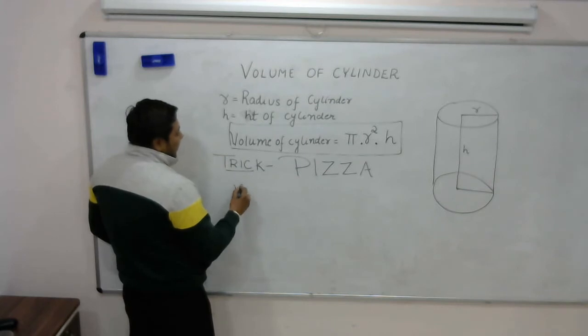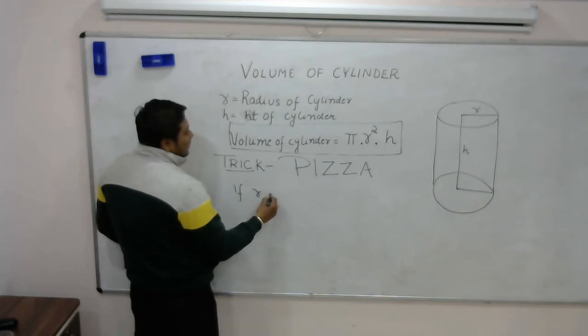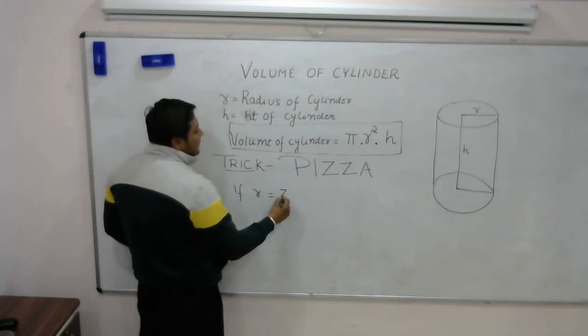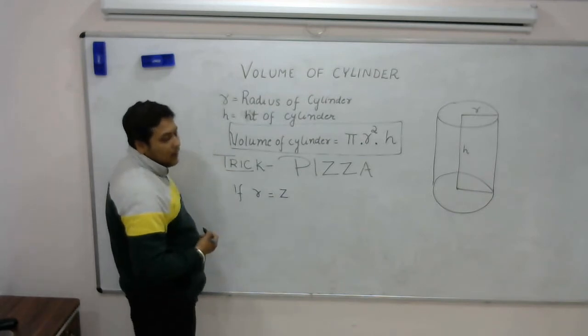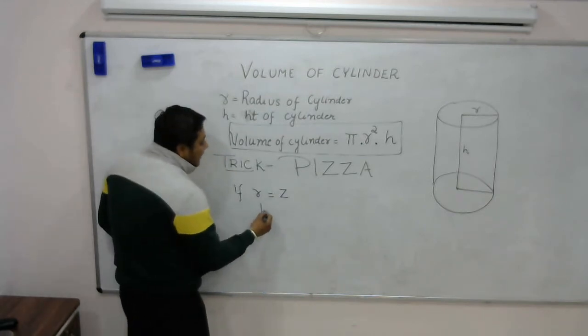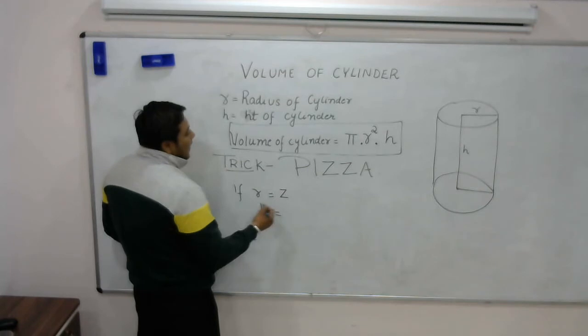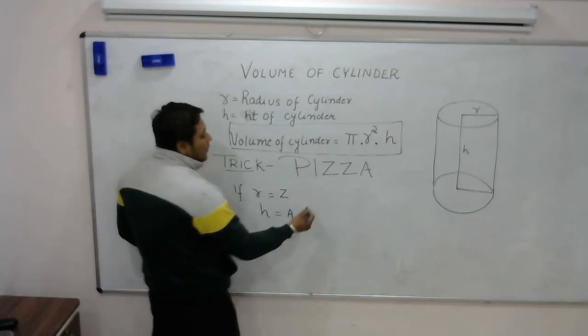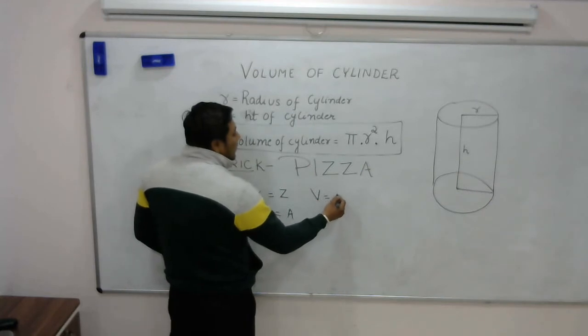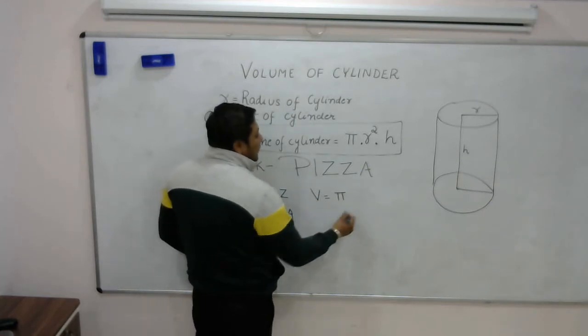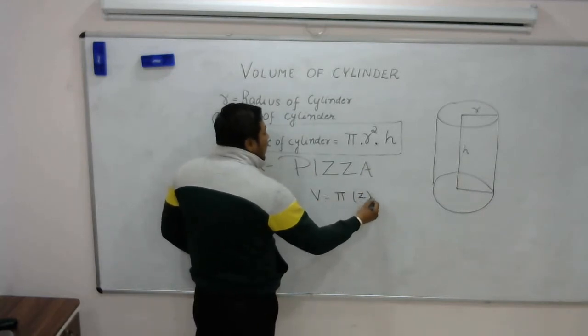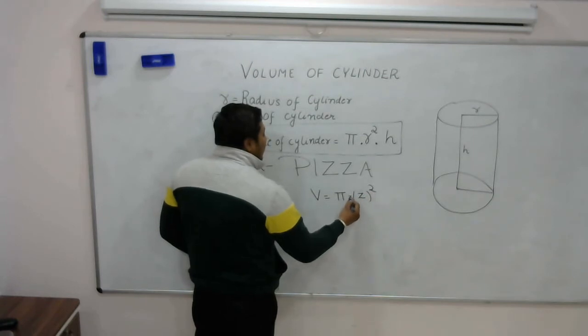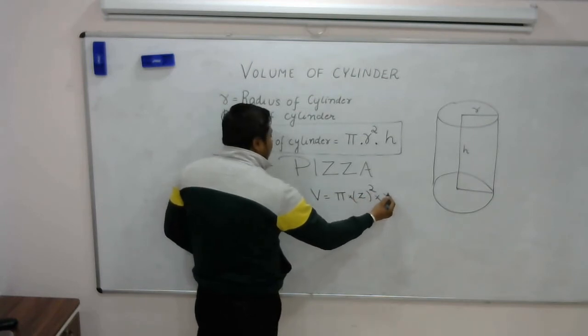If I take radius of cylinder as Z and height of cylinder as A, then what will be the volume of cylinder? Pi Z squared into A.